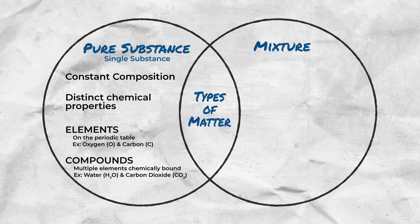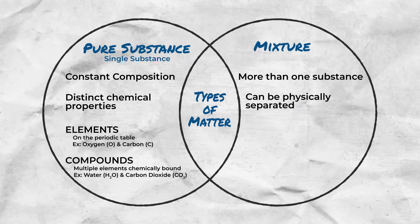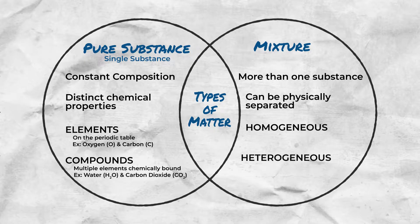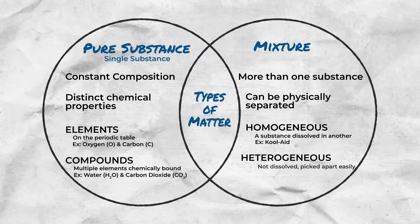Compounds consist of multiple elements bonded together, such as water and carbon dioxide. A mixture consists of two or more substances that do not have constant composition and can be physically separated. Mixtures fall under two types: homogeneous and heterogeneous. Homogeneous mixtures consist of one substance dissolved in another, such as Kool-Aid.